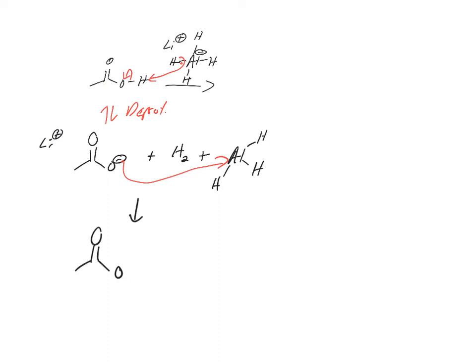This is going to become important in a second. Where should there be a negative charge? Which atom should have a negative charge? Aluminum has a negative charge now, and it looks a lot like it did before. The aluminum has the negative formal charge, but the electron density is actually on these three hydrogens. What have we just done? We've just made this an intramolecular reaction — the hydrides are right there.